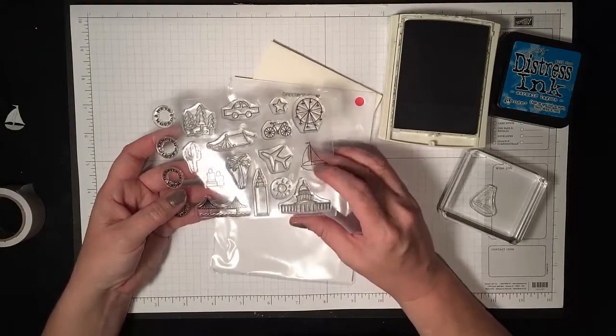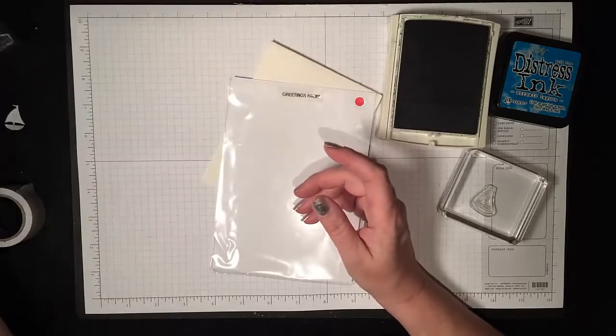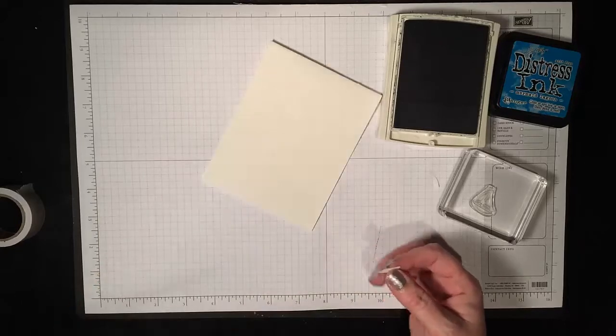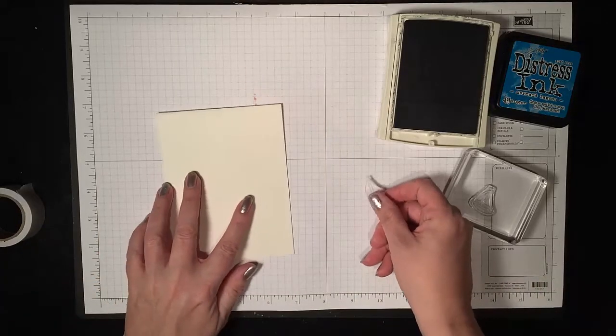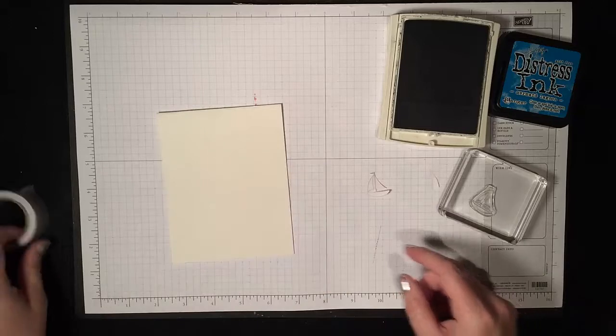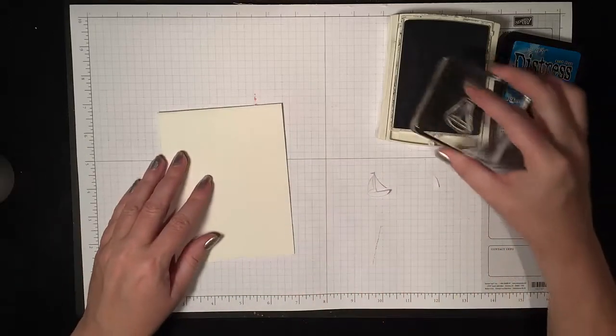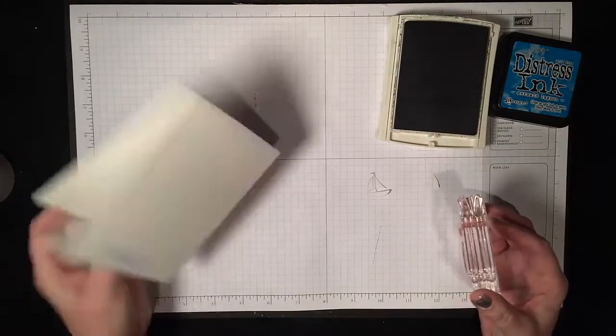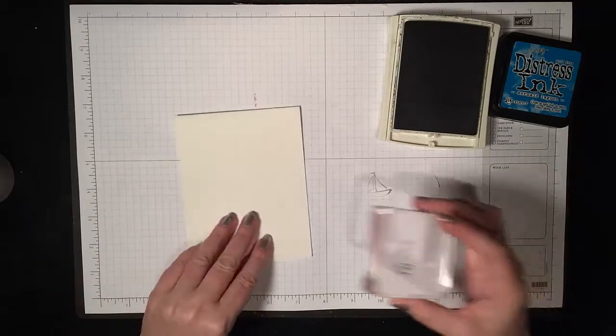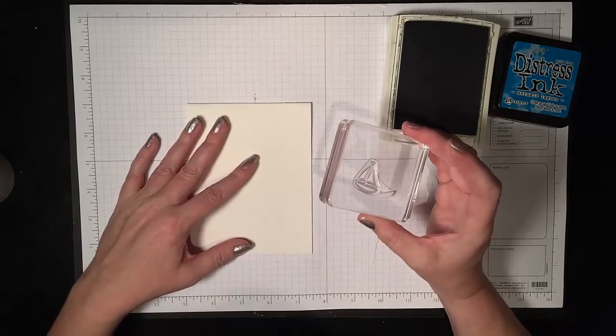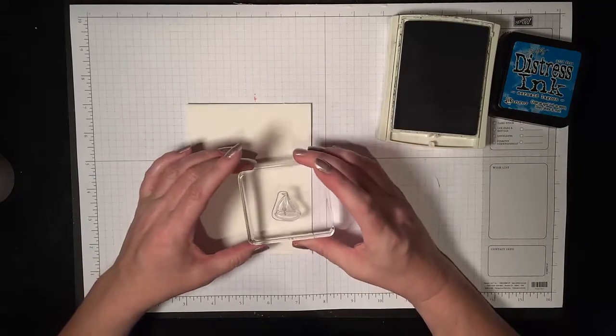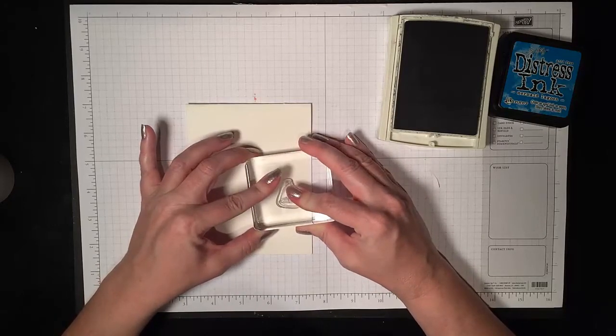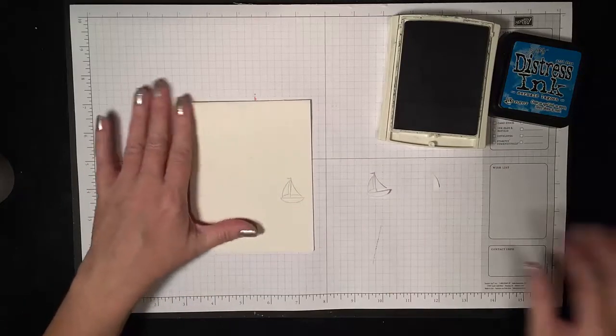I'm using the little photopolymer set with a sailboat called Greetings From from Stampin' Up! I've stamped the sailboat on a piece of my Frisket masking tape. It was just the right width for this little tiny boat. My card base is actually watercolor paper that's already folded into a card shape that was left over from my retreat. I'm using Smoky Slate to stamp the sailboat because I'm going to do no-line watercoloring. It's a nice light ink that'll give me some guidance but also fade away as I paint it.